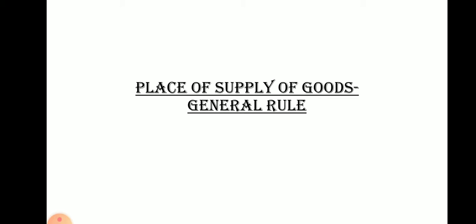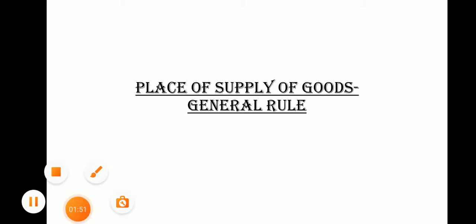We are now seeing place of supply of goods. पहले हम general rule देखेंगे और उसके बाद extensions देखेंगे.